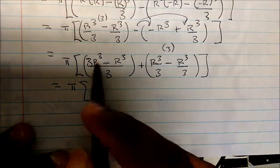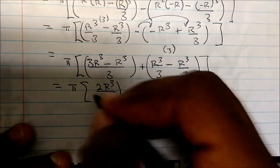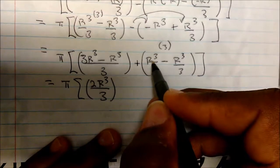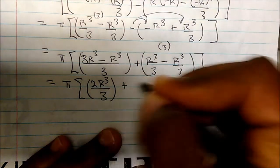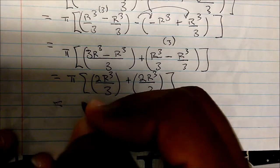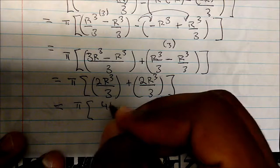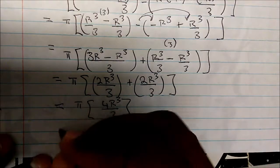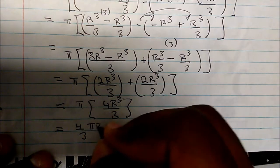This becomes π times: 3r cubed minus r cubed is 2r cubed over 3, plus 2r cubed over 3. Adding these with common denominators gives 4r cubed over 3. Distributing the π, this becomes 4/3 π r cubed.